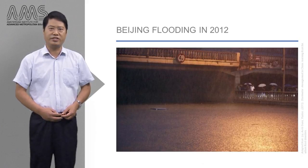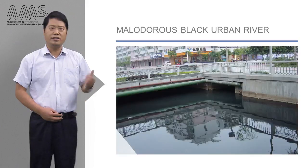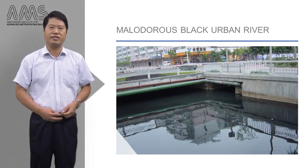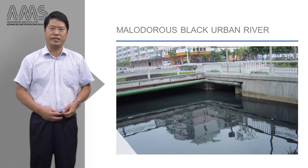Similar flooding disasters have also occurred in other big cities such as Shanghai, Guangzhou, and Wuhan. This is a photo of the malodorous black urban river also taken in Foshan in 2003. The river is located in the center of the city, the water quality was seriously polluted, and ecological conditions were degraded.